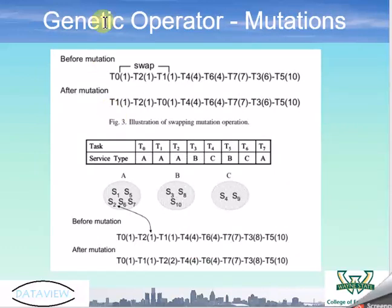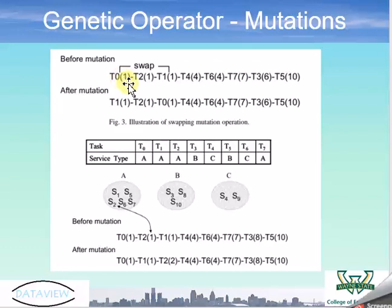The next type of genetic operator is mutation. Mutations are used to give children traits that are not possessed by either parent, allowing for more diversification of the algorithm and providing an opportunity for better solutions. Shown here are swapping mutation on top and replacing mutation on the bottom. Swapping mutation changes the execution order of tasks in a chromosome that are competing for a time slot. For example, task 0 and task 1 switch positions — before the mutation it was T0, T2, T1, and after the mutation it was T1, T2, T0.